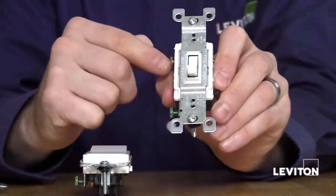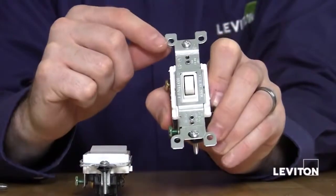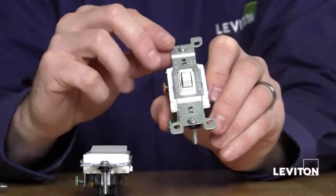Traveler wires are the wires that run between the two three-way switches. This is what allows you to turn the lights on or off from either switch.